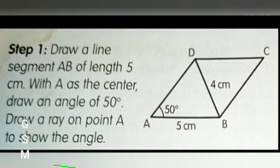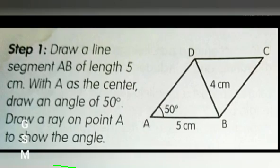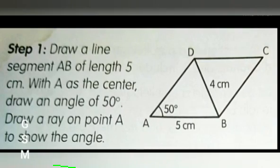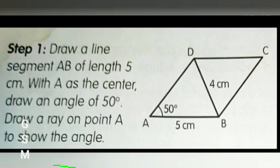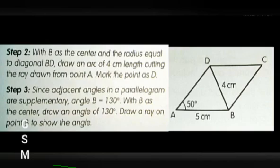Step 2: With B as the center and radius equal to diagonal BD, 4 cm, draw an arc cutting the ray drawn from point A. Mark the point as D.